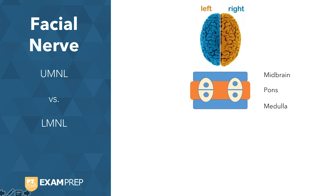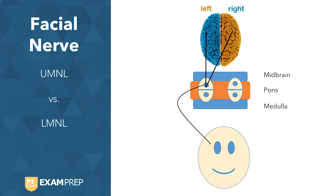The upper part of the face has contralateral motor cortex innervation, but it also has ipsilateral motor cortex innervation — and again, this is only to the upper part of the face. In other words, both the right side and the left side of the brain cause innervation to the upper side of the face.